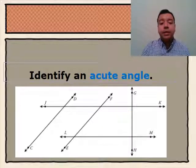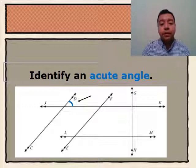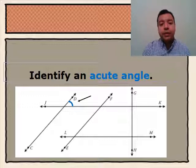Next we'll identify an acute angle from the diagram below. At the intersection of line CD and line JK, we see that we have an acute angle at the vertex. We know it's an acute angle because it is smaller than 90 degrees and the opening is smaller than a right angle.